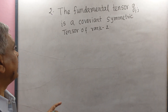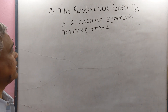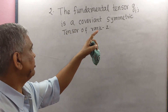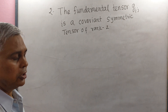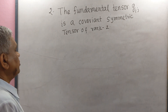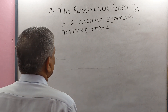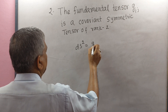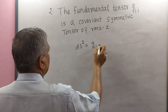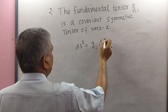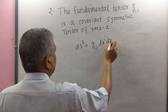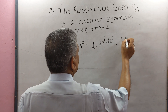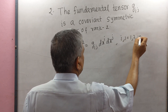Now we shall prove that the fundamental tensor g_IJ is a covariant symmetric tensor of rank 2. As we know that ds² = g_IJ · dxI · dxJ, where I and J equal 1, 2, ..., n.